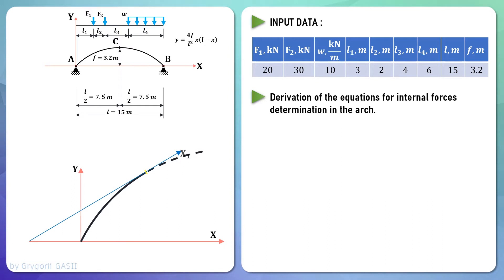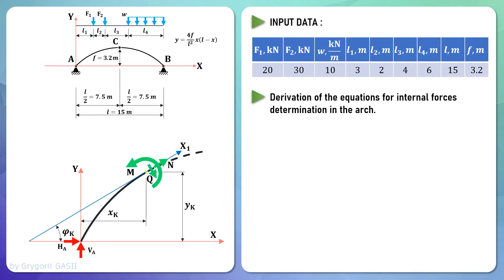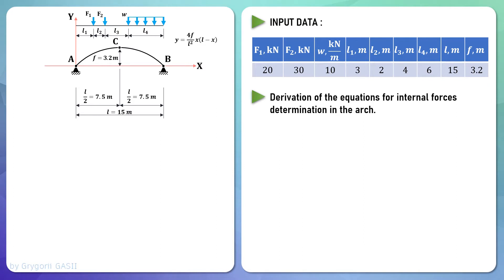Before writing the equilibrium equations, one needs to understand that the arch is a curved beam. Moreover, for the arch and the line beam with the same vertical load, the vertical support reactions are the same. Let's verify that the vertical support reactions for the beam and arch are the same. For now, let's set aside the model of the left part of the arch — we will return to it later.